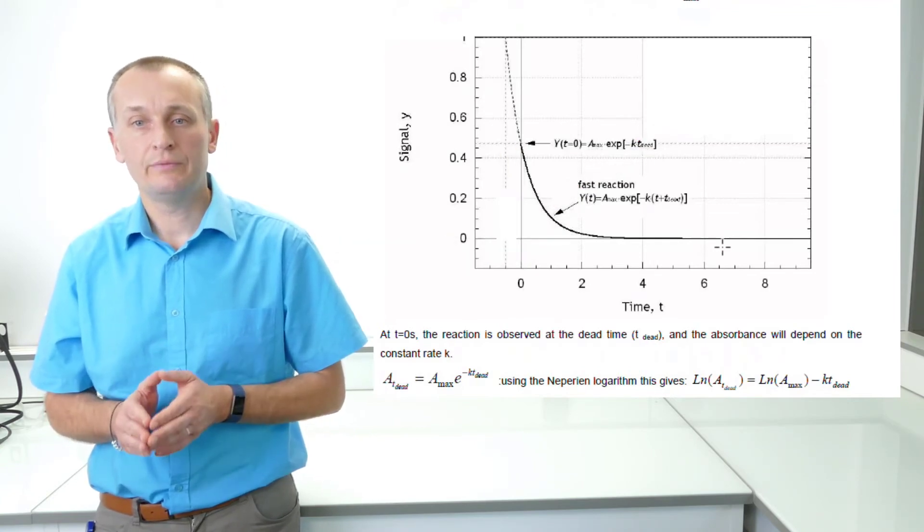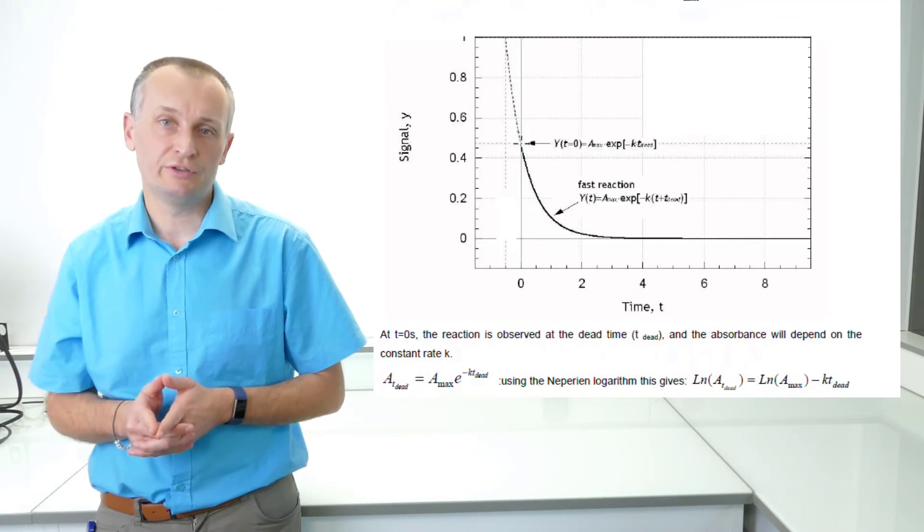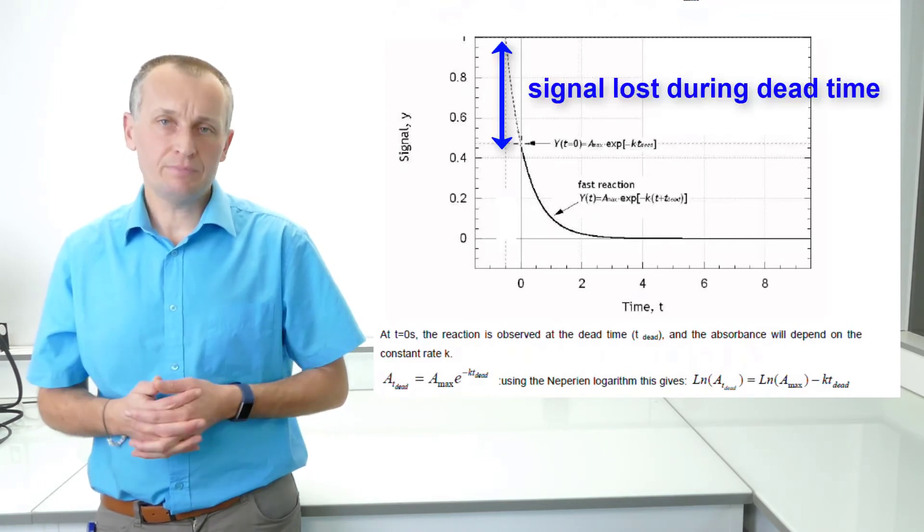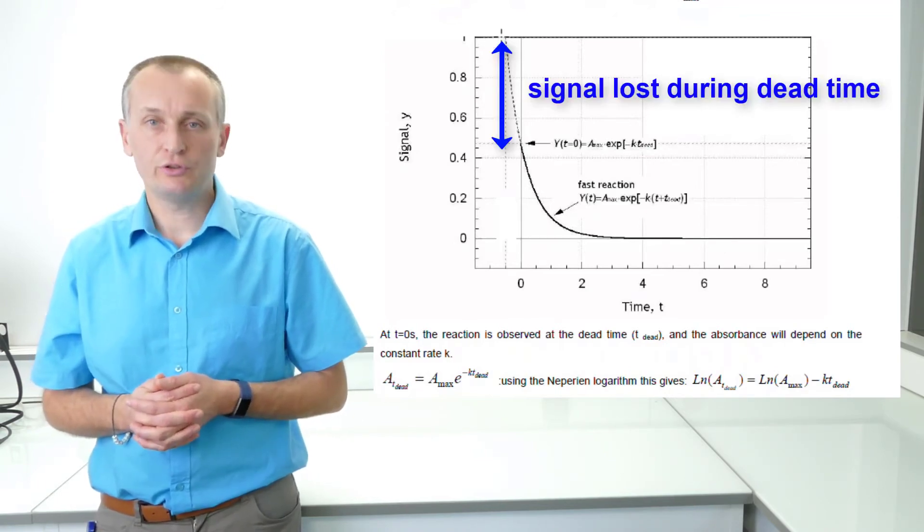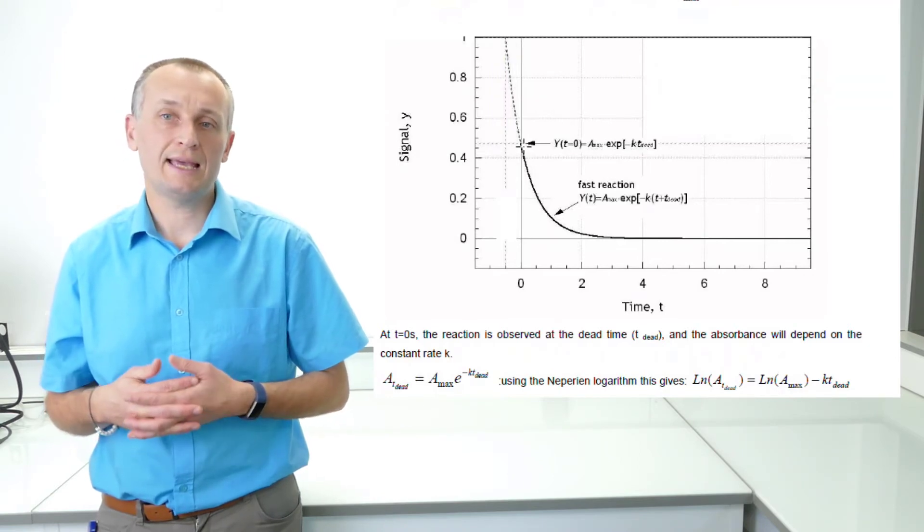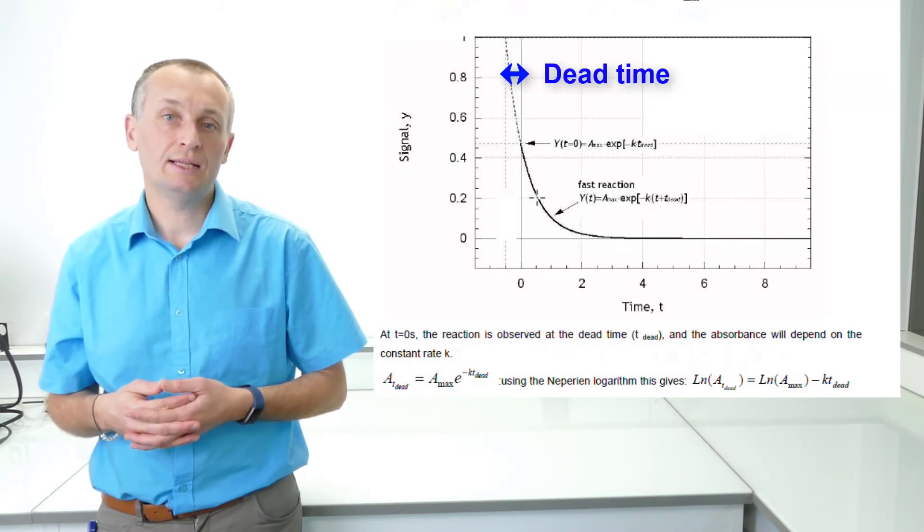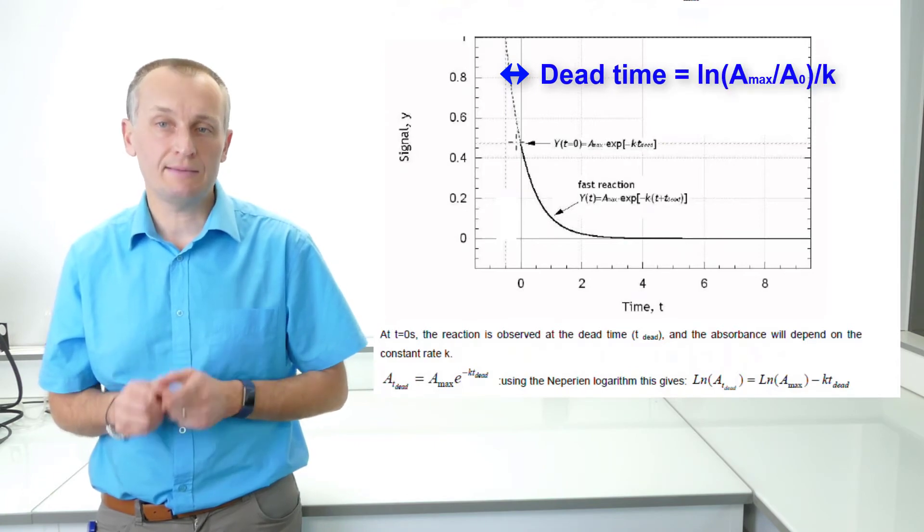If the dead time was zero, this amplitude would match the amplitude of the dilution. The missing part of the signal is the reaction that occurs during the dead time. Therefore, by extrapolating the exponential, it is possible to determine the time shift on the time axis. This is the dead time.